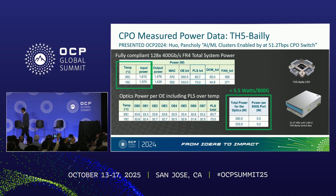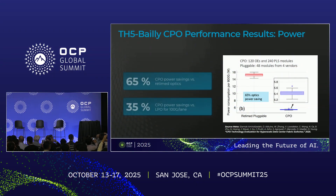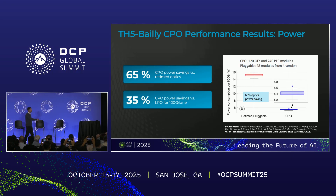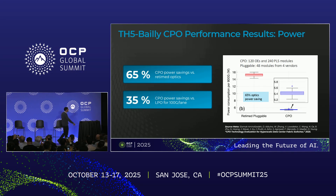We said the box should be about 5.5 watts. Meta's data: 5.5 watts. That's a 65% reduction over pluggables with retimed optics, and 35% over LPO — at 100 gig per lane.